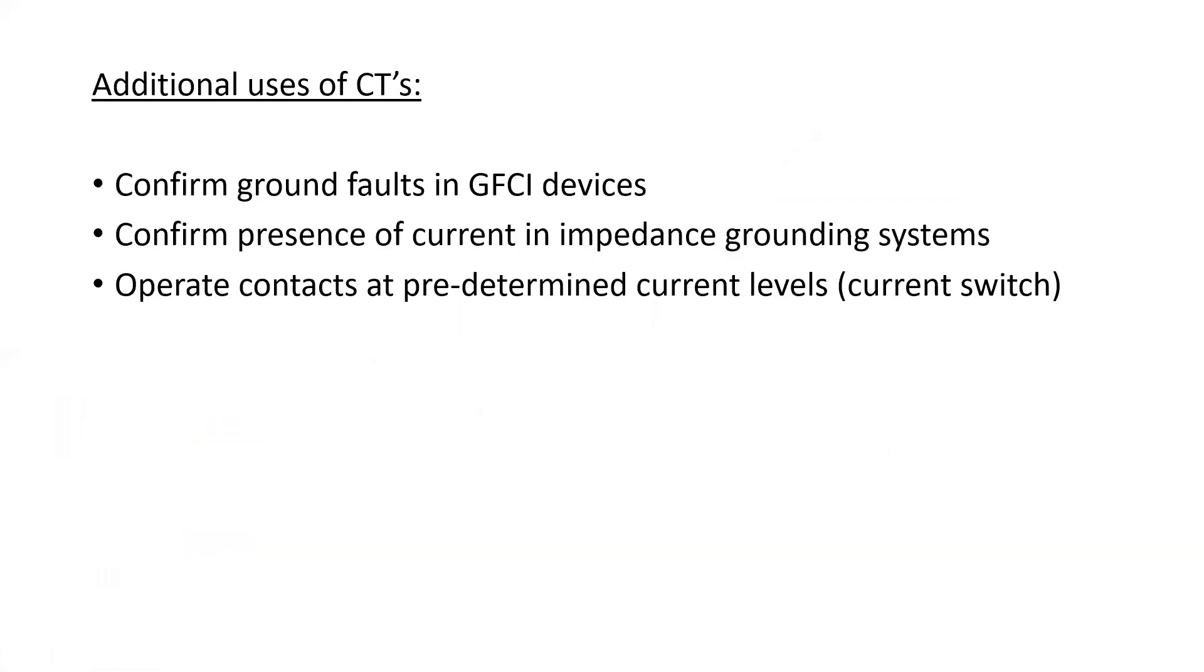So what additional uses do we have of CTs? Well, we can confirm ground faults in GFCI devices. We can confirm the presence of current in impedance grounding systems. And we can also operate contacts at predetermined current levels, which is often known as a current switch. These are just some of the additional uses of CTs. There are far more out in industry.